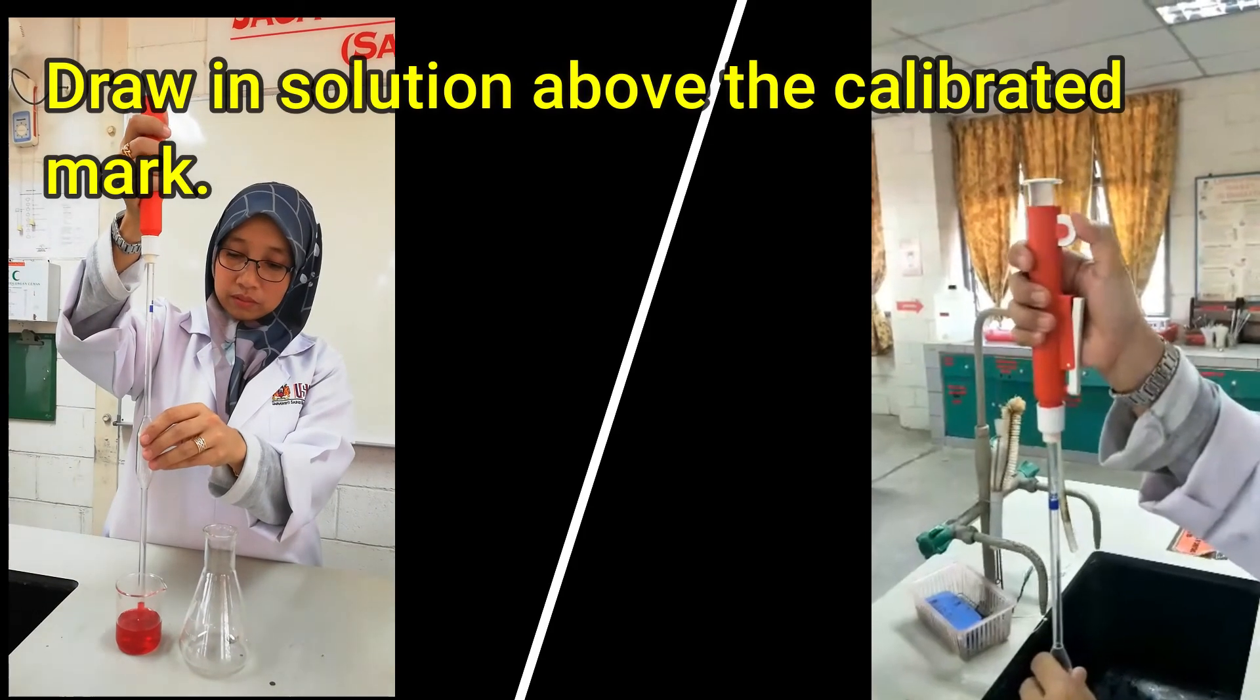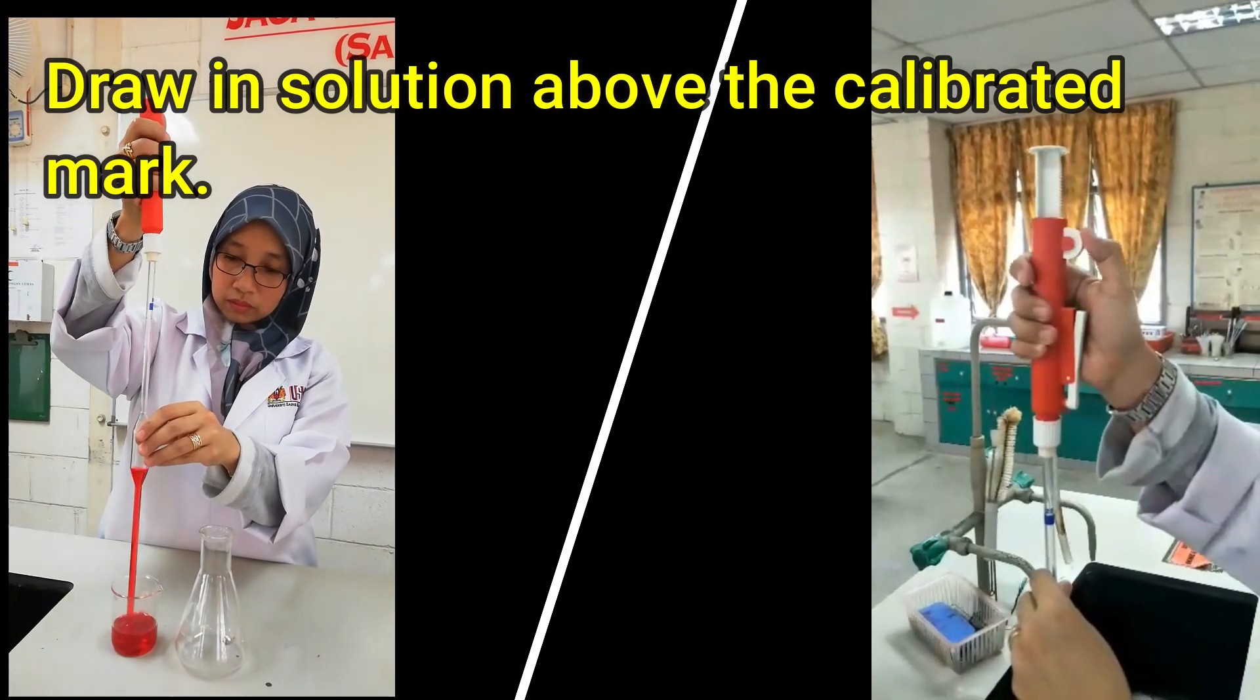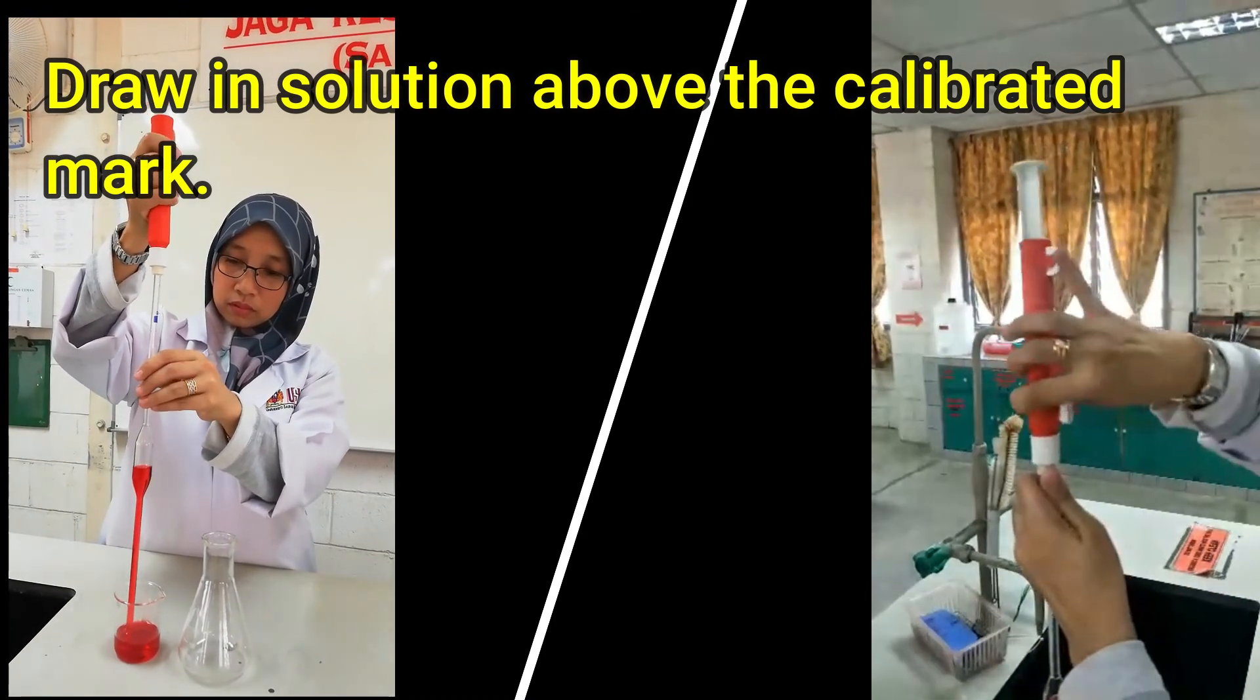Pour slightly more than the required amount of the solution into a beaker. Dip the tip of the pipette into the solution. The tip should be placed well below the surface of the solution. Use a pipette filler or bulb to draw in solution above the calibrated mark.